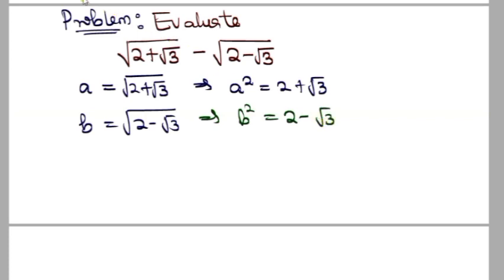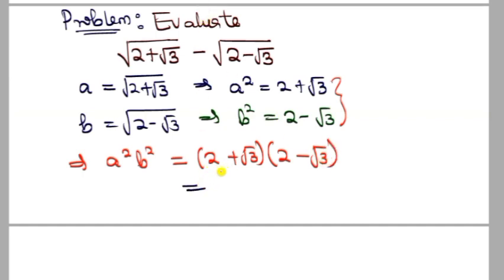So let's multiply them: a²b² = (2 + √3)(2 - √3). Since these are conjugates, we use the difference of squares formula.